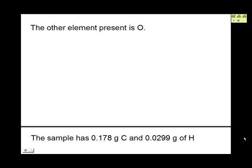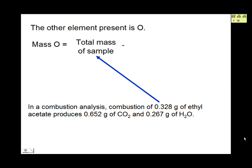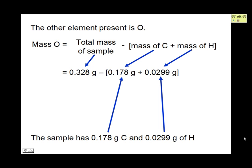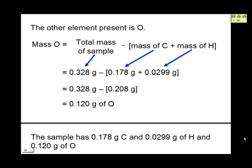The other element present is oxygen. We calculate the mass of oxygen by taking the total mass of the sample, 0.328 grams, and subtracting the sum of the masses of C and H. This is 0.328 minus the sum of 0.178 and 0.0299 grams, which is 0.328 grams minus 0.208 grams, giving us 0.120 grams of oxygen.